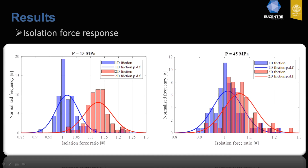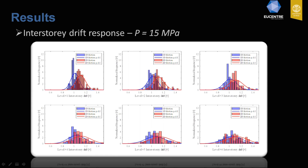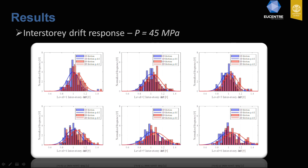Concerning the isolation force response, as expected, the bidirectional friction characterization provides a slightly higher force with respect to the radial case for both pressures of 15 MPa and 45 MPa. The same behavior was observed for the base shear response. For the interstory drift response, the same trend is observed, and notably the variability increases as the story number increases. This behavior is present even though with lower variability also for the 45 MPa pressure case.